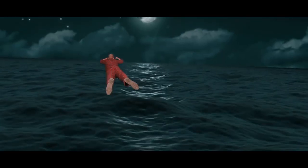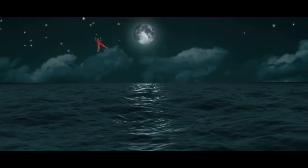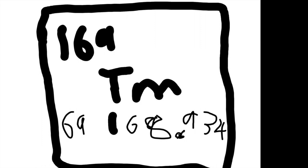Today we're gonna do thulium. The symbol for thulium is TM right in the middle, and the number on top — 69 — that is the atomic number. That number also appears on the bottom left, which is the number of protons in the element.